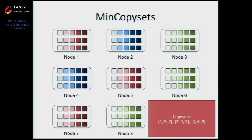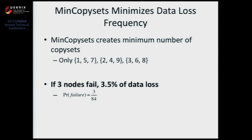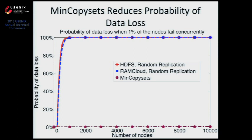Looking at the math for min copy sets: we only created three copy sets. If three random nodes from our cluster of nine fail at the same time, the probability that we hit that exact copy set is only 3 divided by 84, which is 3.5% — much, much smaller than 100%. If we plot this scheme on a large cluster, it's basically the exact opposite of random replication, giving very close to zero probability of data loss under the power outage scenario.